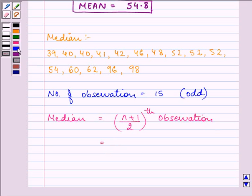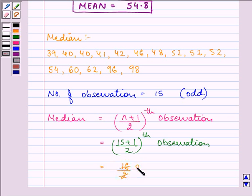That is further equal to n is 15 plus 1 divided by 2. That is further equal to 16 by 2. That is 8th observation.